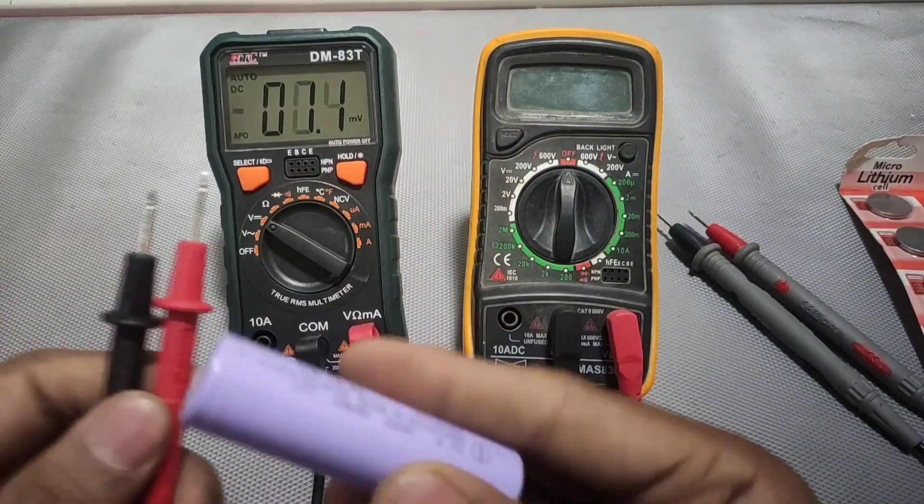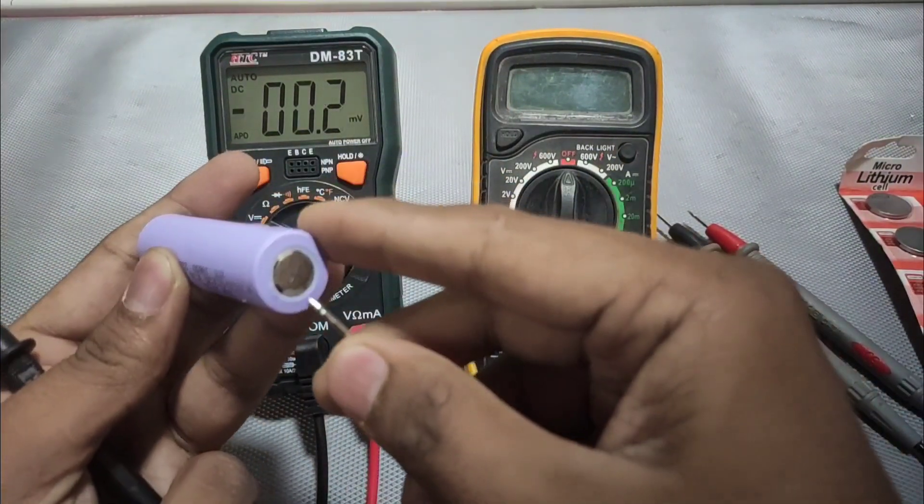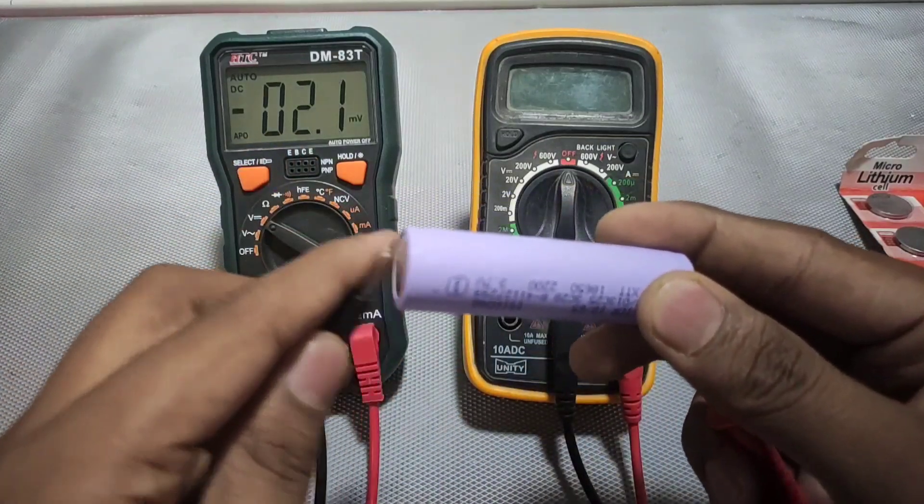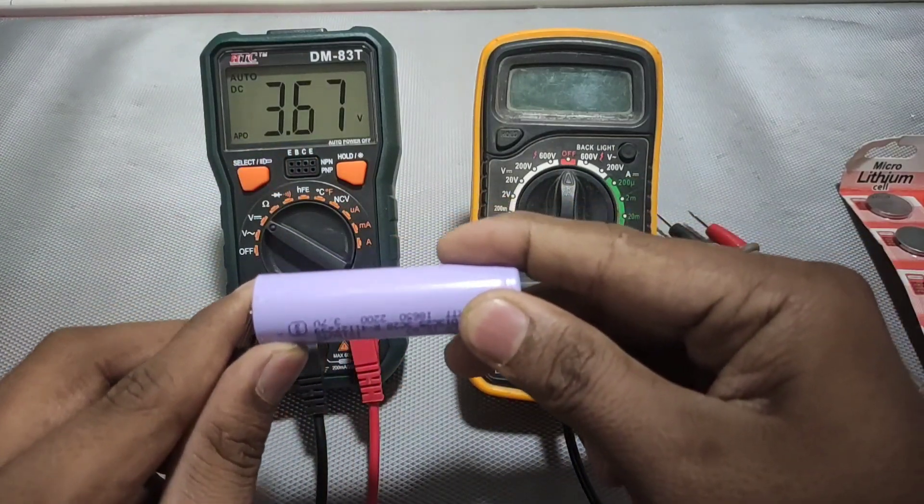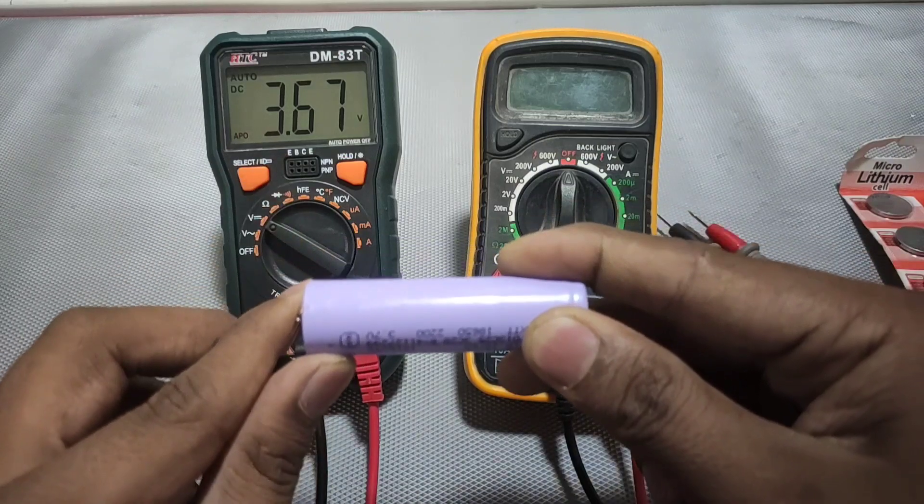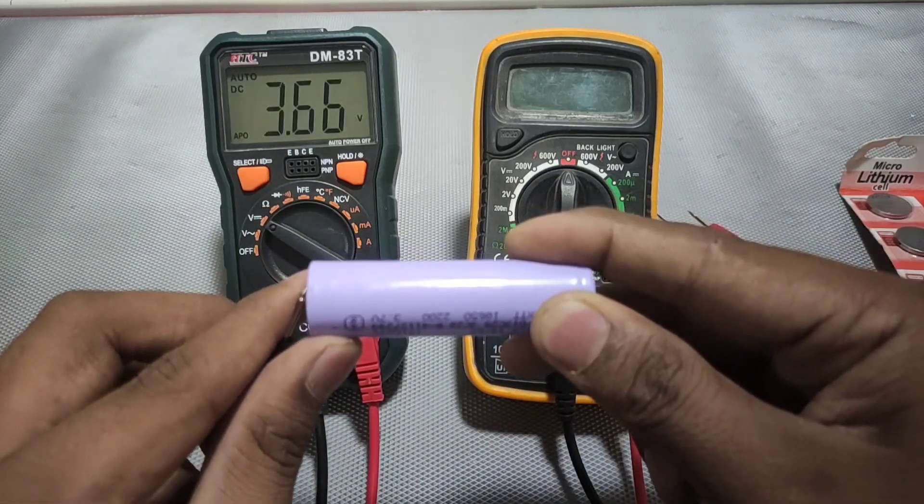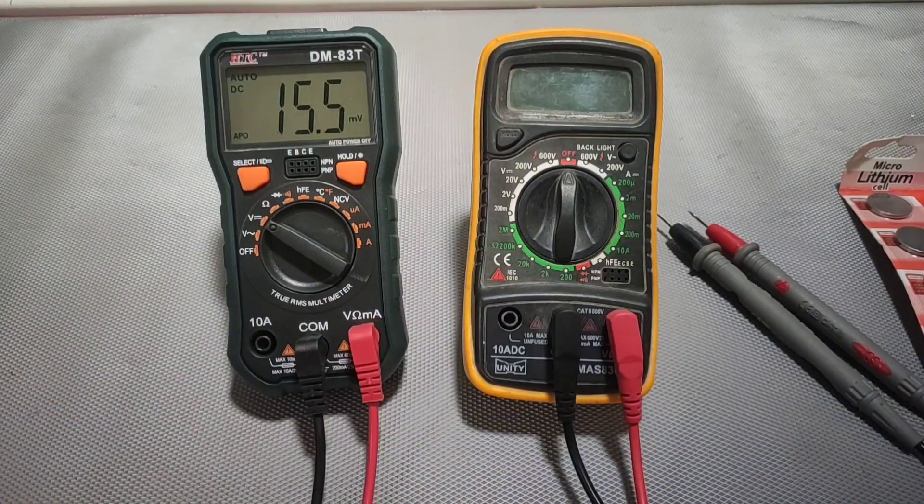So let's use 18650 and measure the voltage. It shows 3.67 volts. Let's measure again and it's 3.67.